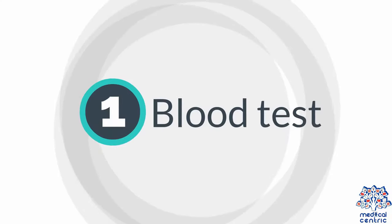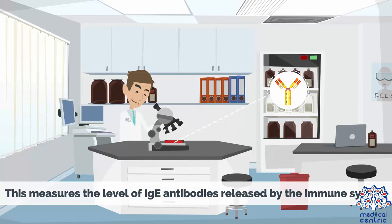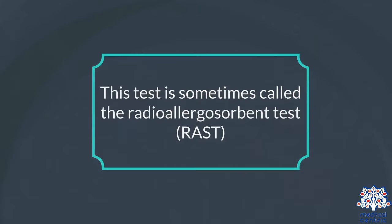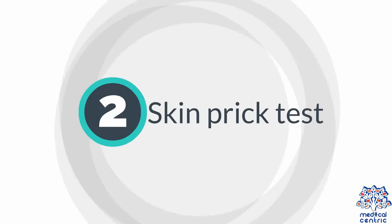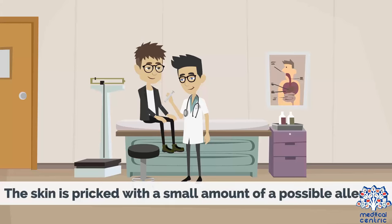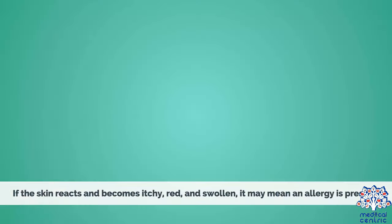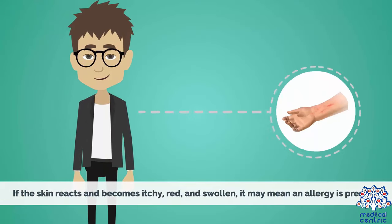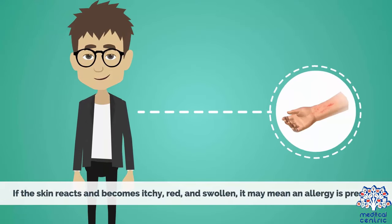Below are some examples of allergy tests. Blood test: this measures the level of IgE antibodies released by the immune system. This test is sometimes called the radioallergosorbent test or RAST. Skin prick test: also known as puncture testing or prick testing. The skin is pricked with a small amount of a possible allergen. If the skin reacts and becomes itchy, red and swollen, it may mean an allergy is present.